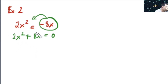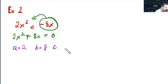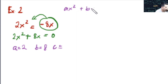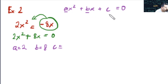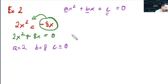Let's determine the values for a, b, and c. For a, that is 2. For b, that is 8. As for c — based on the standard form ax² + bx + c = 0 — there is no constant term, so c is equal to 0. That's how you illustrate and determine the values of a, b, and c.